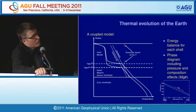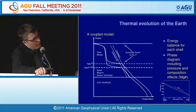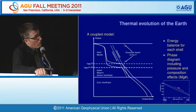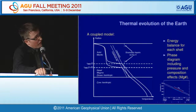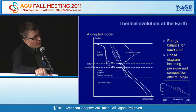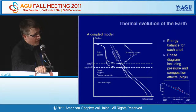We have developed a global model for Earth's evolution coupling three shells: a solid mantle shell, a basal magma ocean shell (liquid), and the core. We solve energy conservation for each shell, follow the evolution of basal magma ocean crystallization over time, and account for phase diagrams for freezing at the bottom of the mantle, considering both pressure and composition effects on the liquidus.